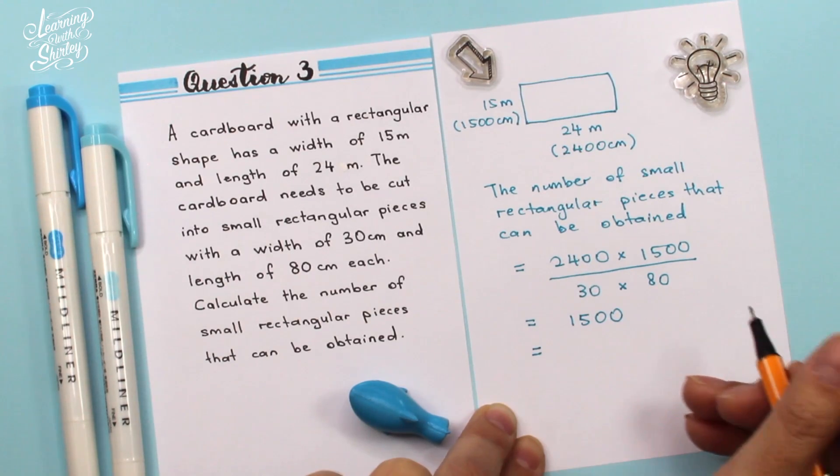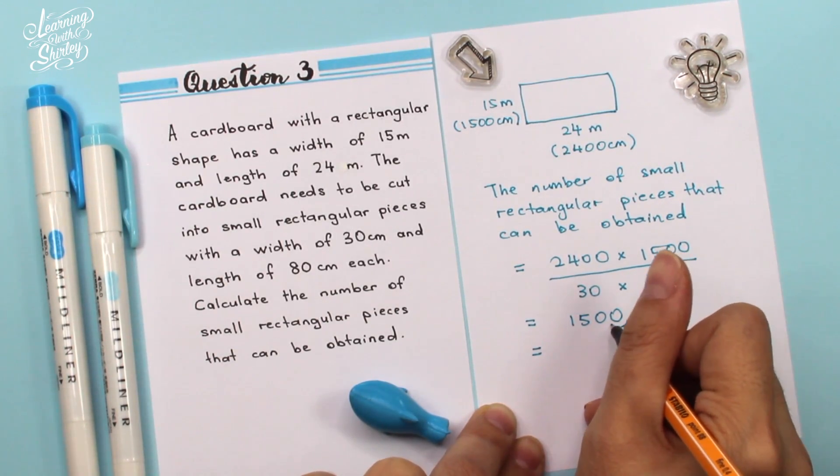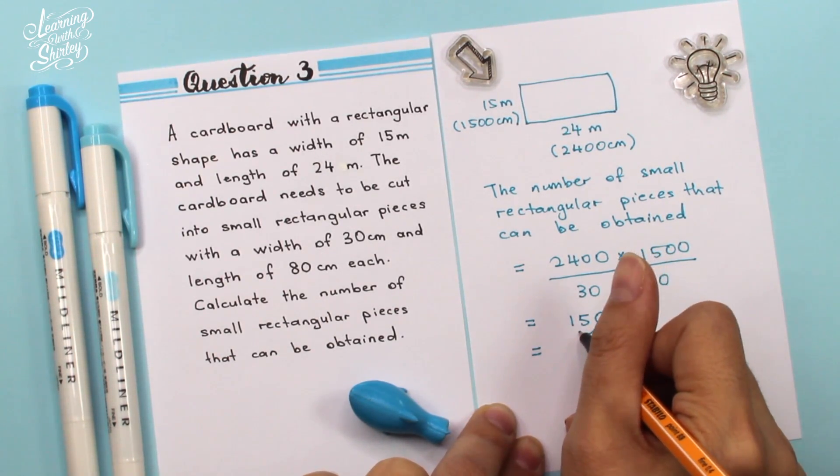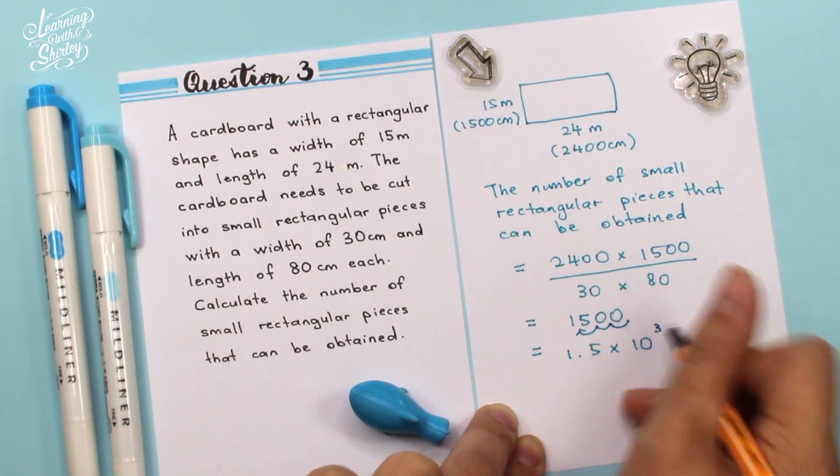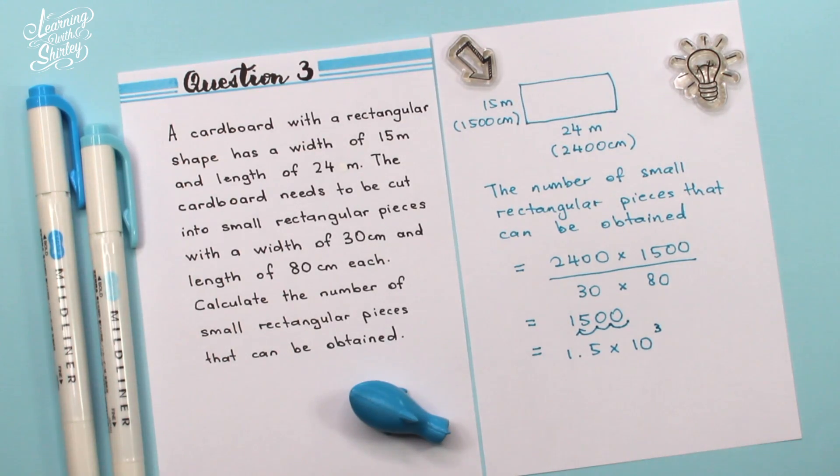So now I have to change to standard form. So I have to move it 1, 2 and 3 places. So 1.5 times 10 to the power of 3 pieces. So that's the final answer.